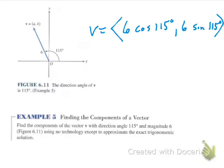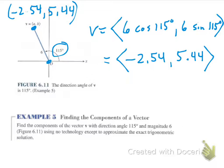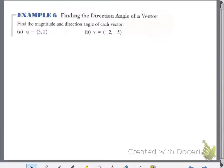6cos(115°) ≈ −2.54 and 6sin(115°) ≈ 5.44. So the vector is approximately ⟨−2.54, 5.44⟩. Notice that the terminal point is in the second quadrant, and 115° is a second quadrant angle — that is not a coincidence. Where the vector lies on the coordinate plane will affect the measure of the direction angle.